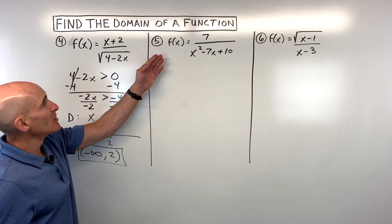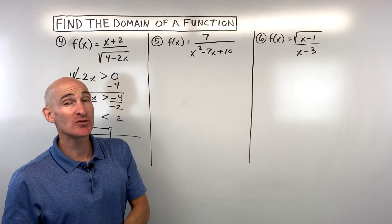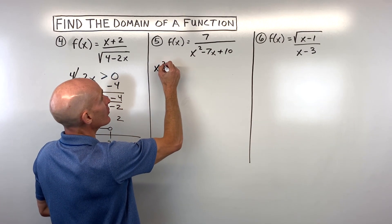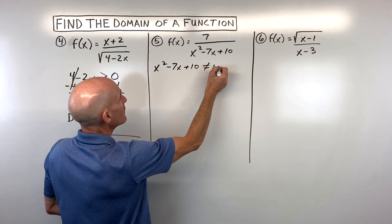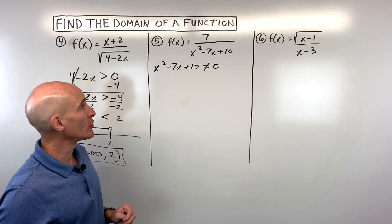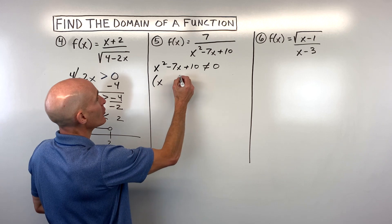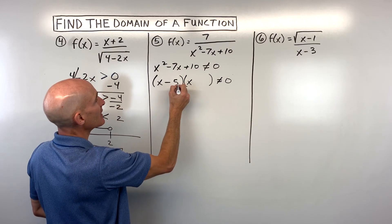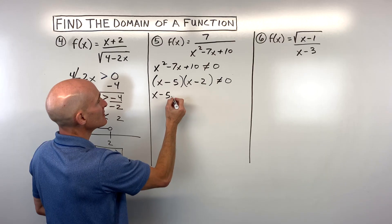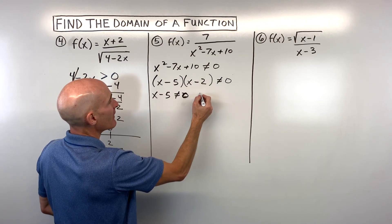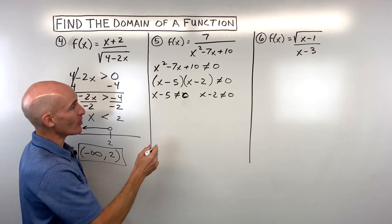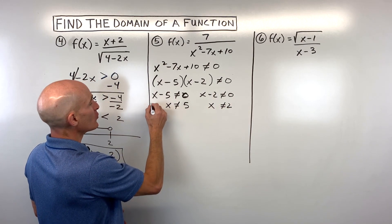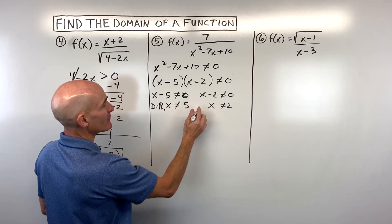Let's take a look at number five. The first thing I notice is that this denominator cannot be zero, because we can't divide by zero — that's undefined. The other thing I notice is that this is a quadratic, meaning a second degree polynomial. Let's see if we can factor this. What two numbers multiply to 10 but add to negative seven? That's going to be negative five and negative two. If I set both factors equal to zero — x cannot be five, and x cannot be two.